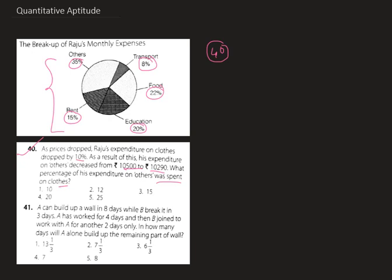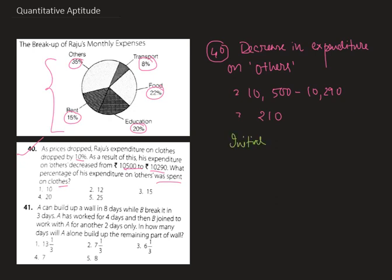First of all, we evaluate the decrease in expenditure on others, which equals ₹10,500 minus ₹10,290, which equals ₹210. Now the initial expenditure on clothes is ₹210 multiplied by 100 divided by 10, which results in ₹2,100.